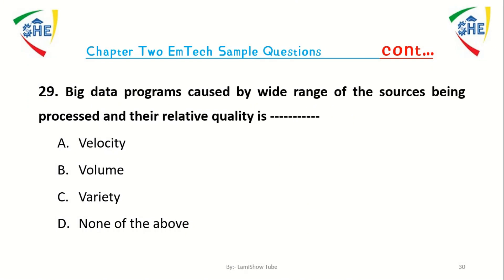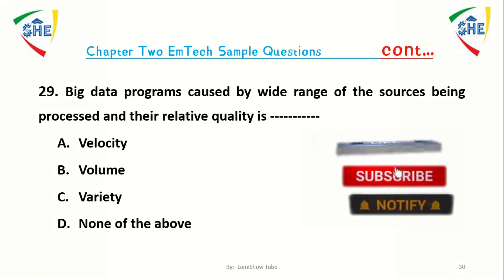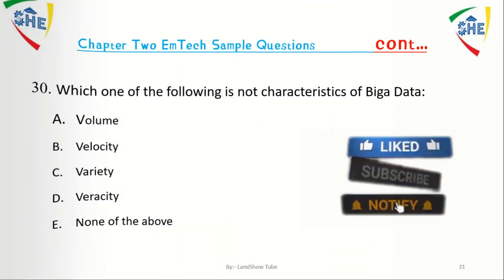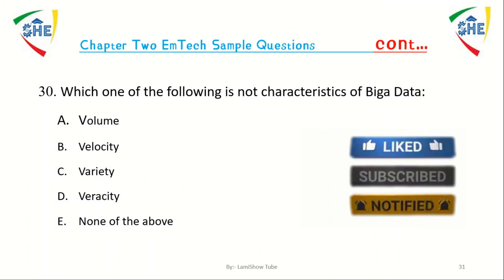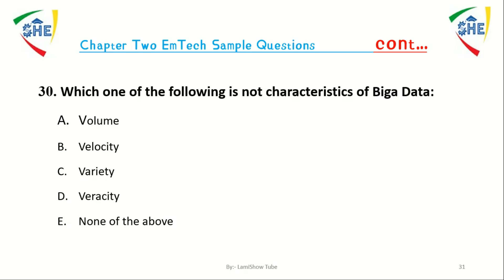Question number 29: A big data problem caused by a wide range of sources being processed and relative quality is dash. A) Velocity, B) Volume, C) Variety, D) None of the above. Question number 30: Which one of the following is not a characteristic of big data? A) Volume, B) Velocity, C) Variety, D) Veracity, E) None of the above.